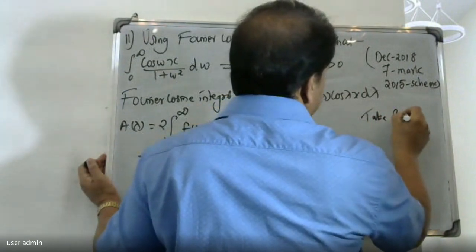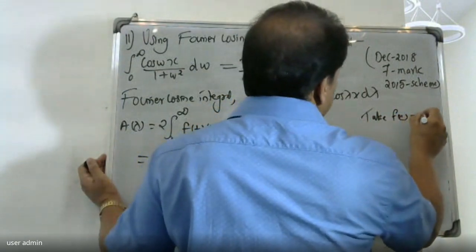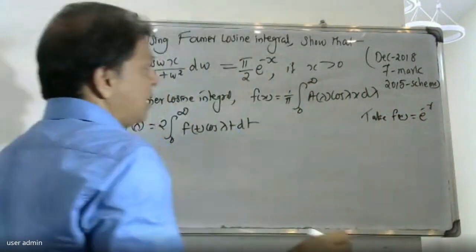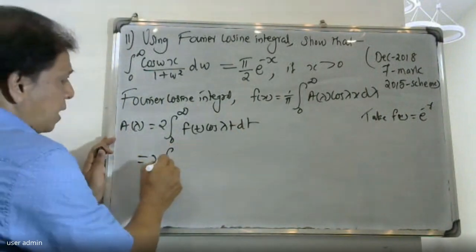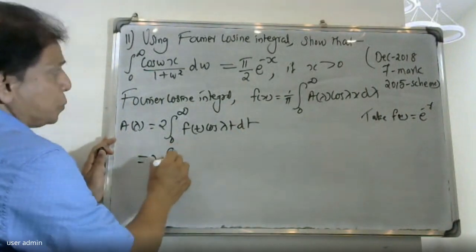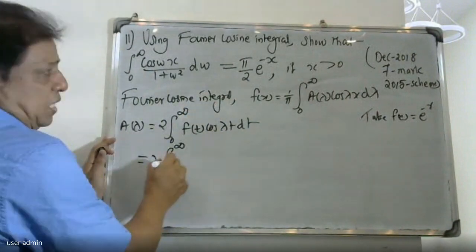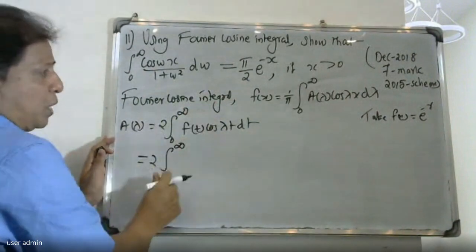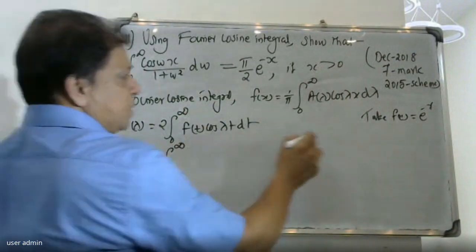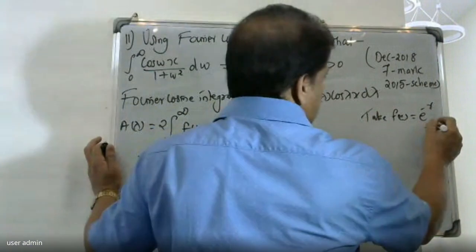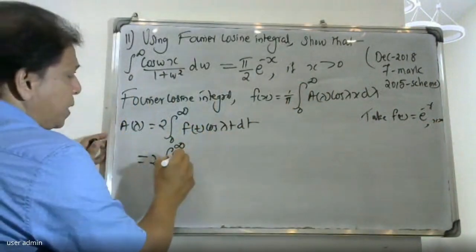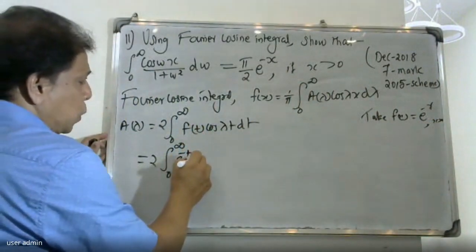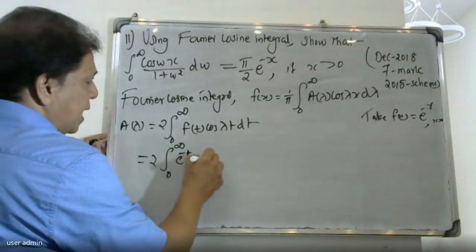Here f(x) = e raised to minus x, where x is greater than 0. So f(t) = e raised to minus t, and we compute A(λ) = 2 ∫₀^∞ e^(-t) cos(λt) dt.